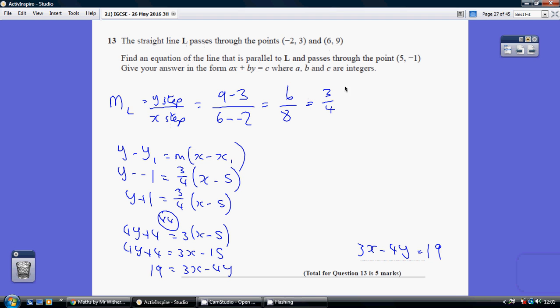So I know the gradient of my parallel line, the one I've got to find an equation for, is 3 quarters. I know both the gradient and a point on the line. So I can use the formula y minus y1 equals m times x minus x1, where x1, y1 is any point on the line, 5 minus 1, and m is the gradient that I've just worked out to be 3 quarters.